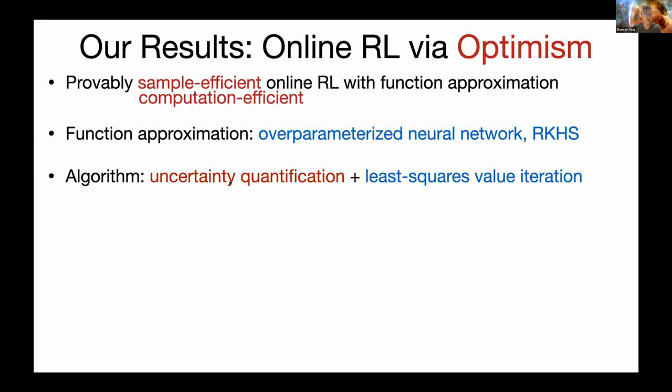We focus on over-parameterized neural networks and construct high-probability confidence regions using neural tangent features. The least squares regression and uncertainty quantification can both be computed efficiently. We use uncertainty as an exploration bonus added to the least squares solution to construct an upper confidence bound — the blue line is the least squares solution and the shaded area is the uncertainty. We use a greedy policy with respect to this upper confidence bound, directly striking a balance between exploration and exploitation: acting on high value (exploitation) or high uncertainty (exploration).